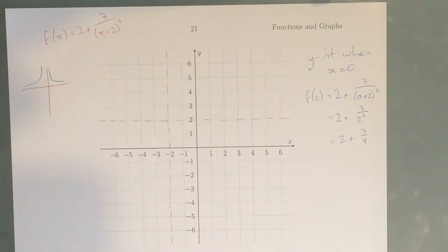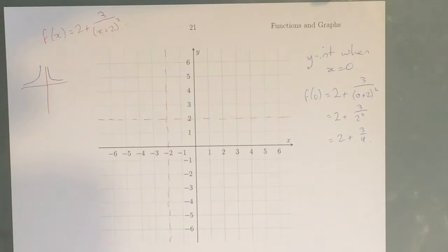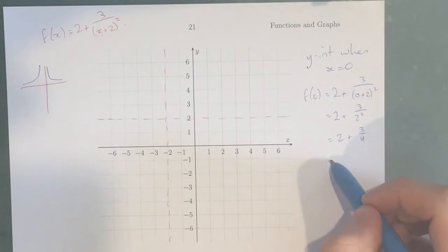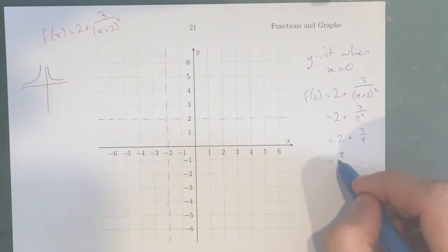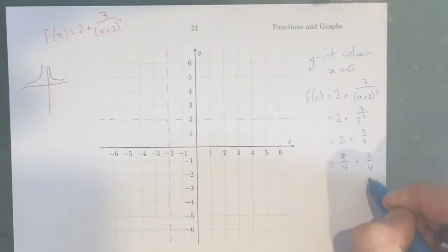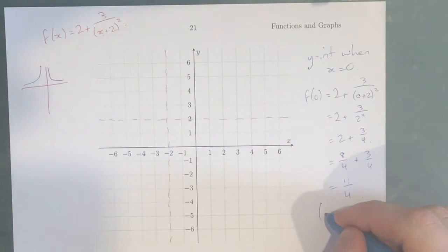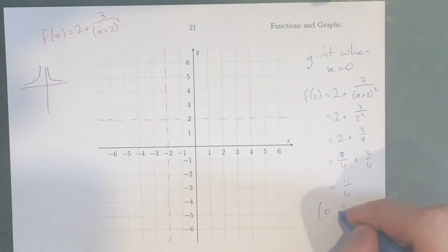Now, this might be a little hard to see where this would be on a graph, but if you're unsure, this is simply 2 and 3 quarters. But we need to get it in a form that we can write as a coordinate. So this becomes 8 on 4 plus 3 on 4, which equals 11 on 4. Which means that our y-intercept is (0, 11/4).